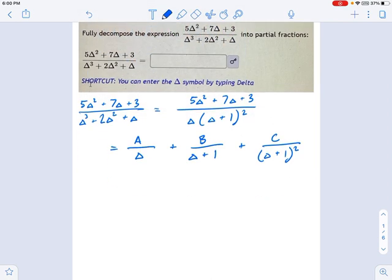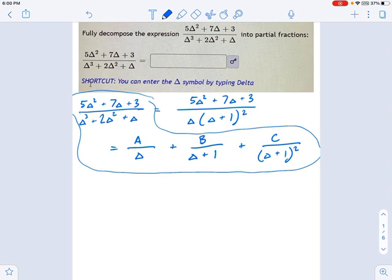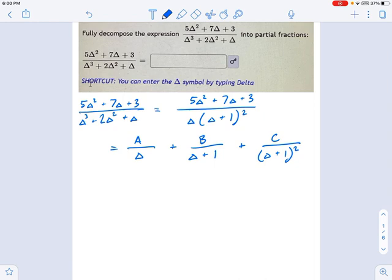Remember what the technique is at this point. We need to solve this equation. And the way you do that is by multiplying both sides by every factor that you see in the denominators. On the left, that's nice and easy. It just turns into 5 delta squared plus 7 delta plus 3. The denominators clear completely.